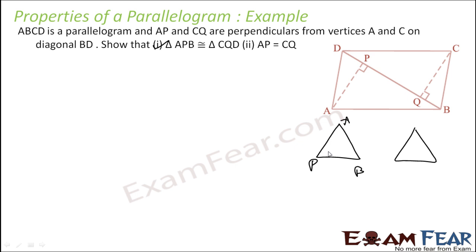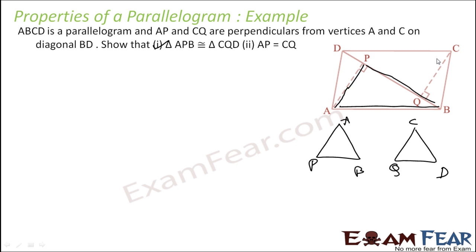First draw the two triangles: triangle APB and triangle CQD — the order has to be maintained. Let's see triangle APB on screen and then CQD. Now, which sides are common? AB will be equal to CD for sure — opposite sides of a parallelogram.